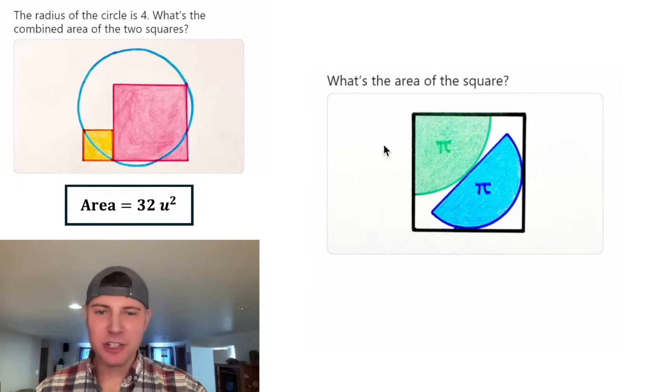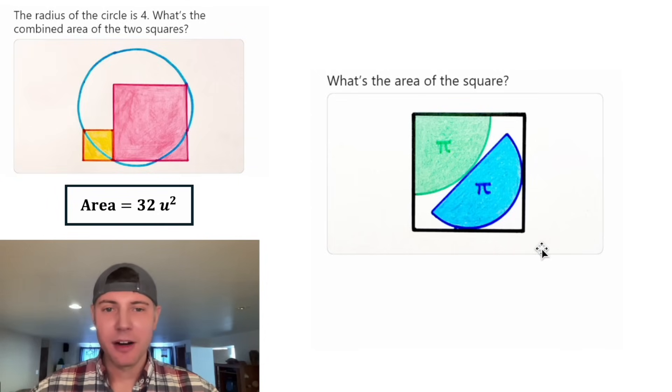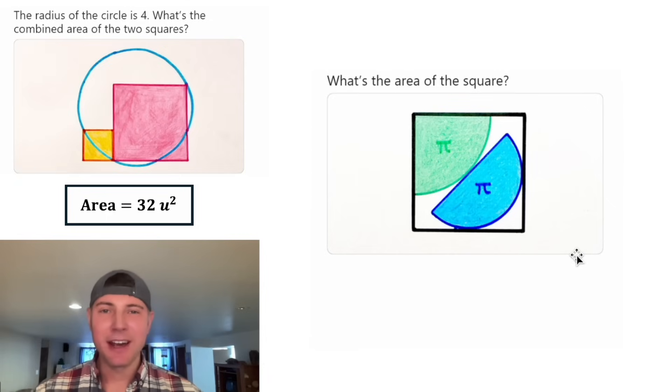Here's tomorrow's puzzle. It wants to know what's the area of this square. We're given a quarter circle with an area of pi and a semicircle with the area of pi. And somehow we're supposed to find out the area of the square. I'm not sure how to do this one. I can't wait to see the next video. How exciting.